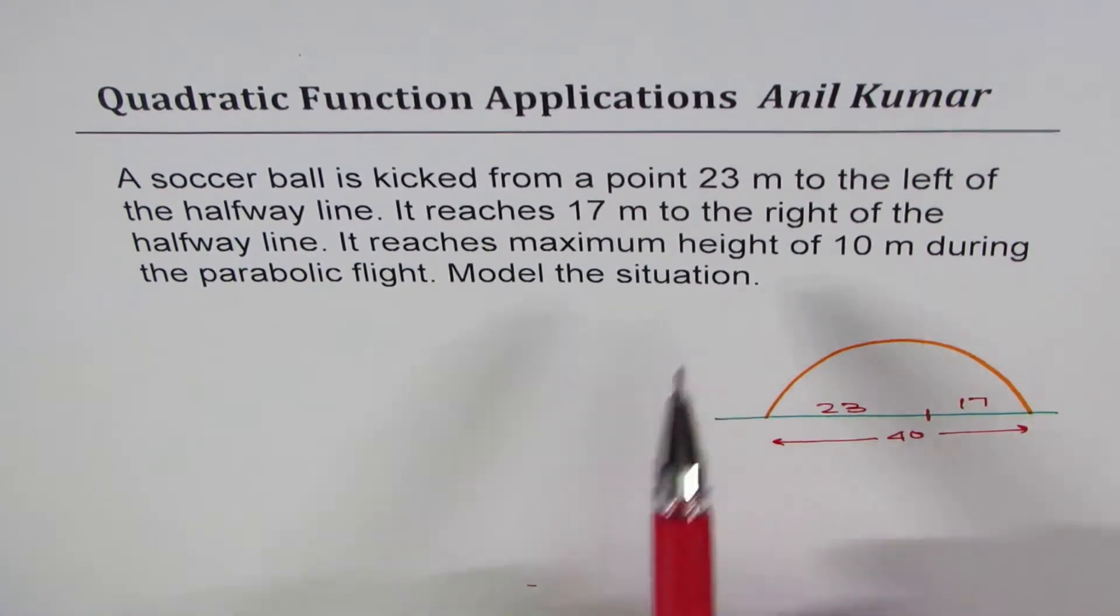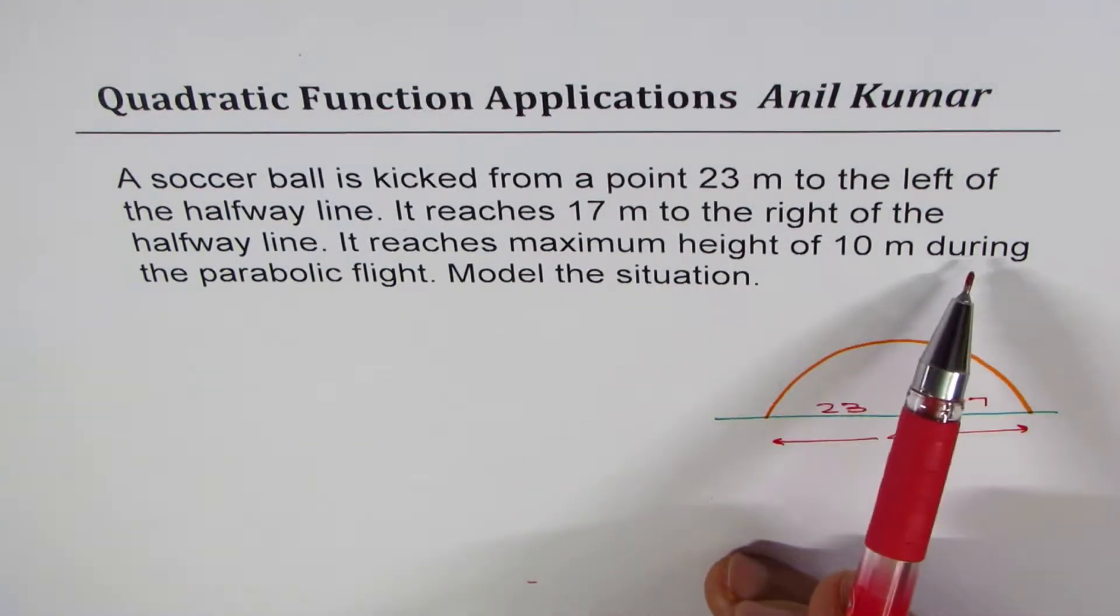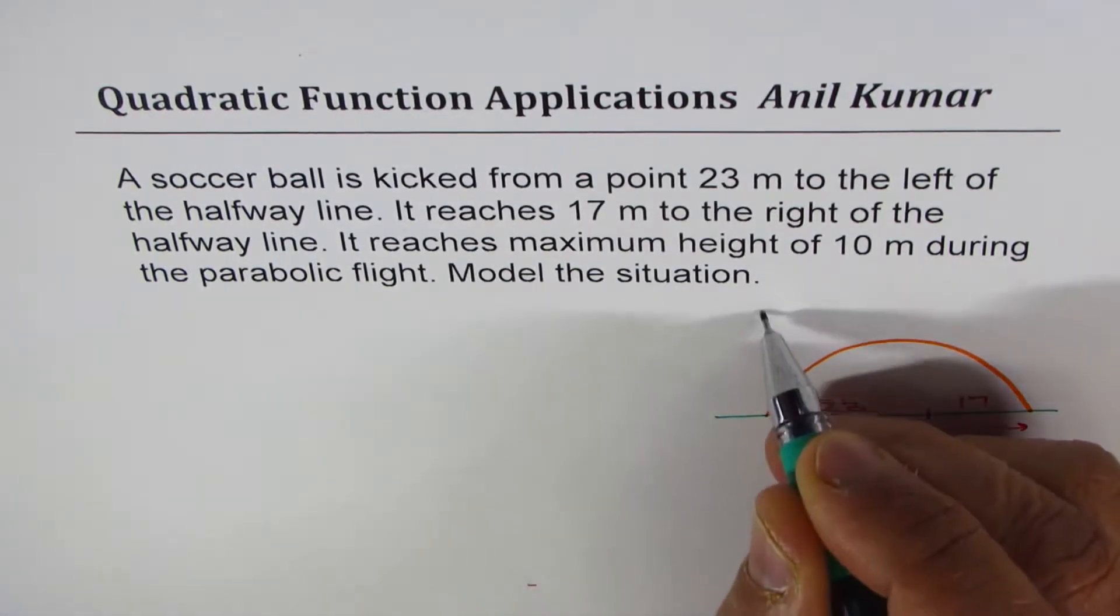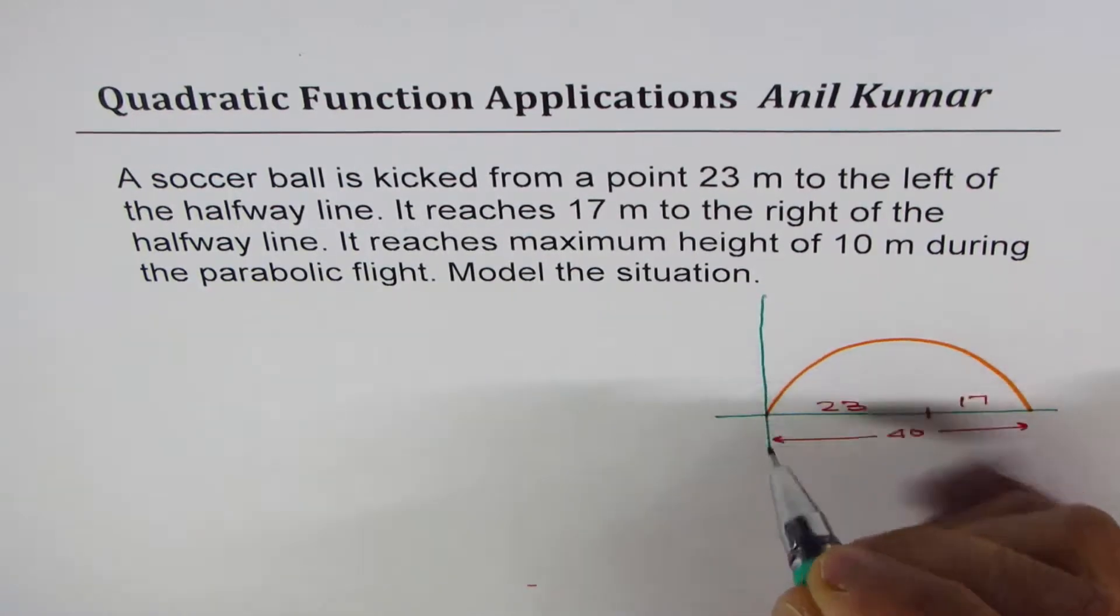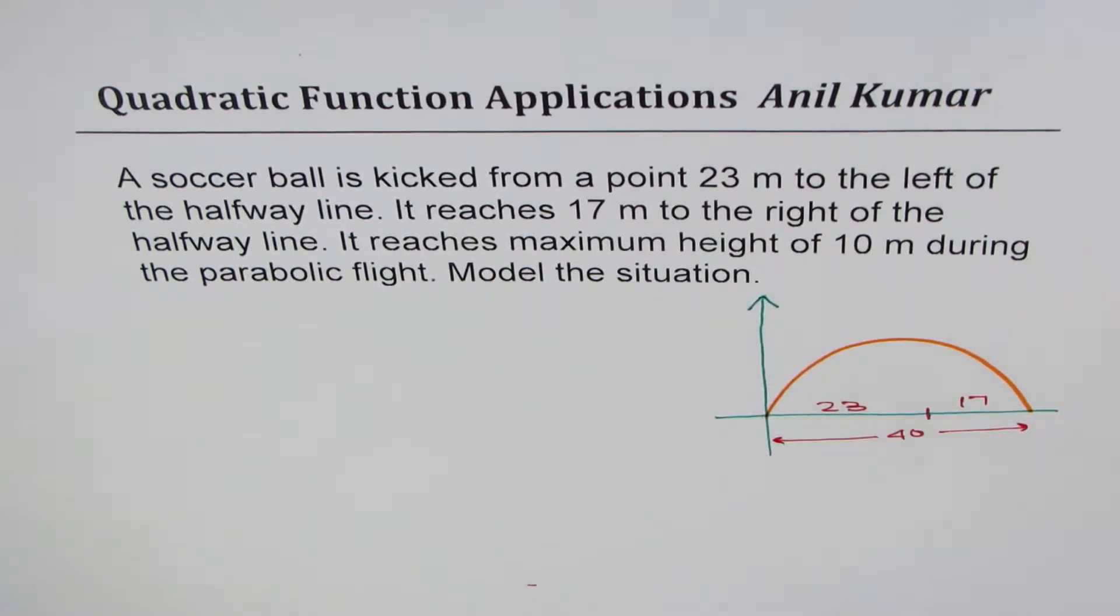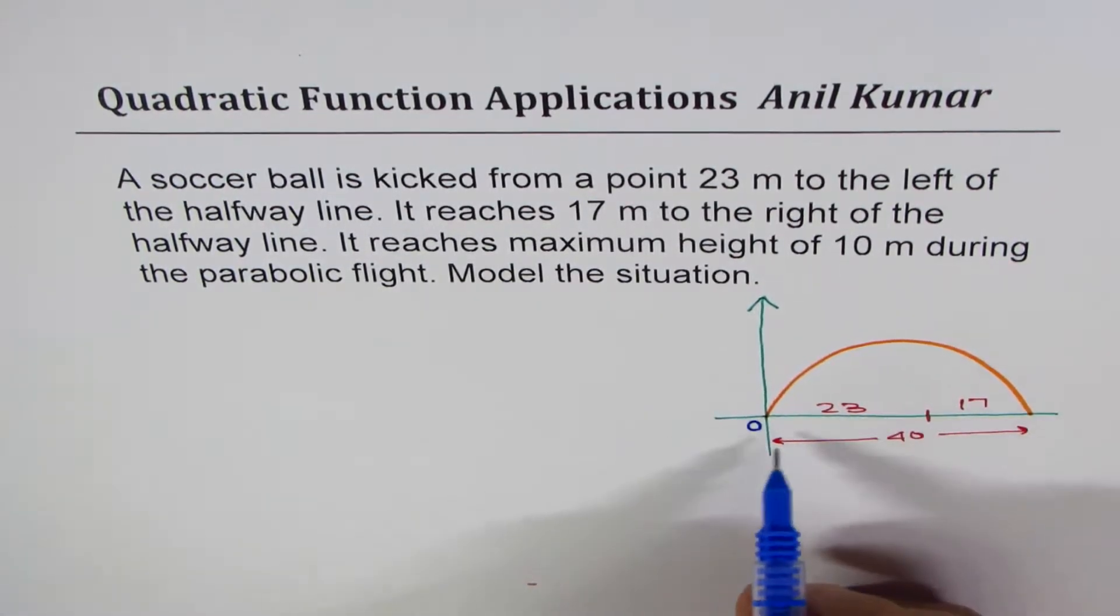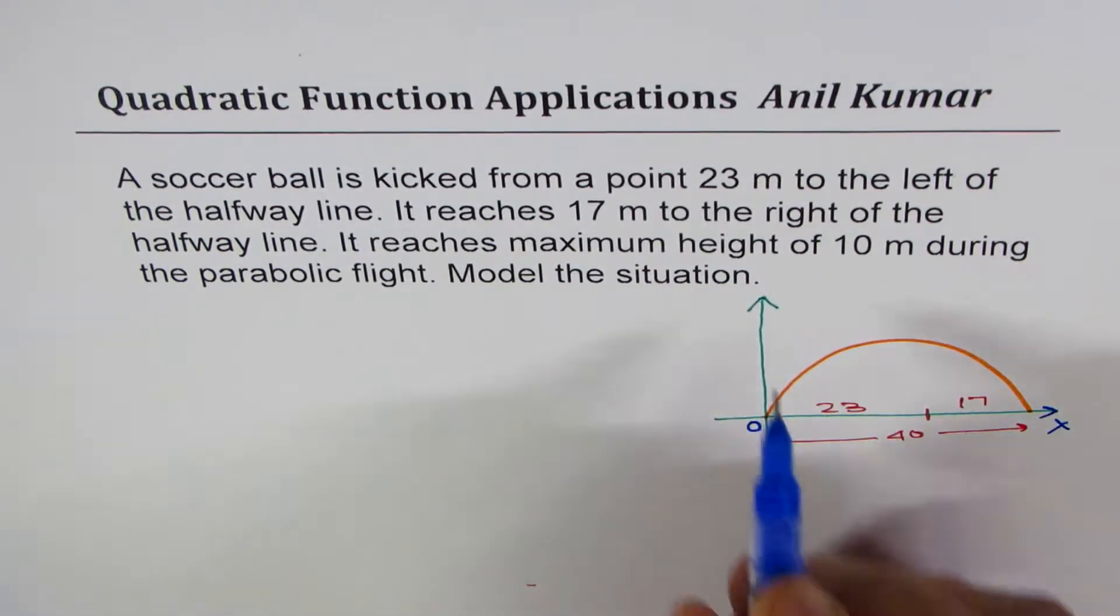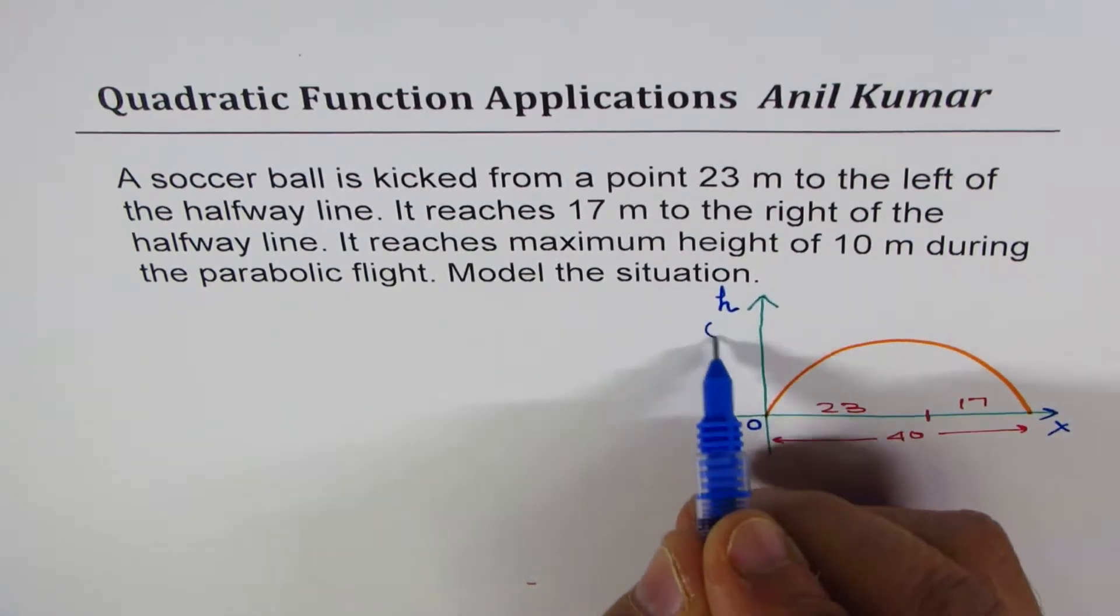It also states that maximum height of 10 meters is reached. Maximum height will be reached only in the midway. So if I take this as my origin, then it is easy for me to correlate everything. So now I'm saying that the ball is kicked from the point here, which seems to be the origin of the coordinate axis. Let X be the distance along the ground and let H be the height. All are in meters.